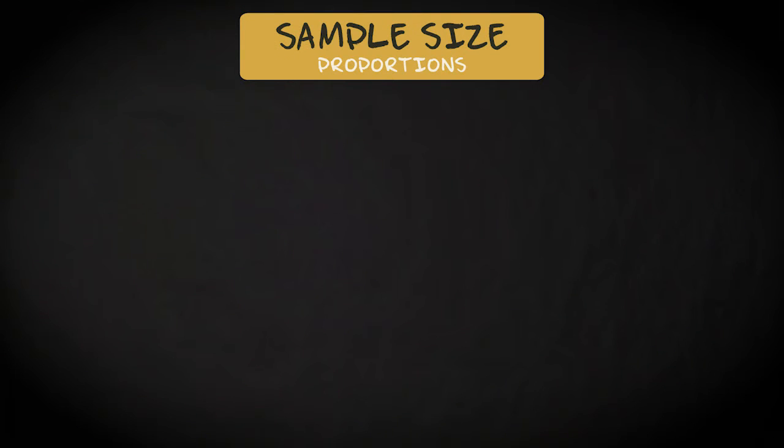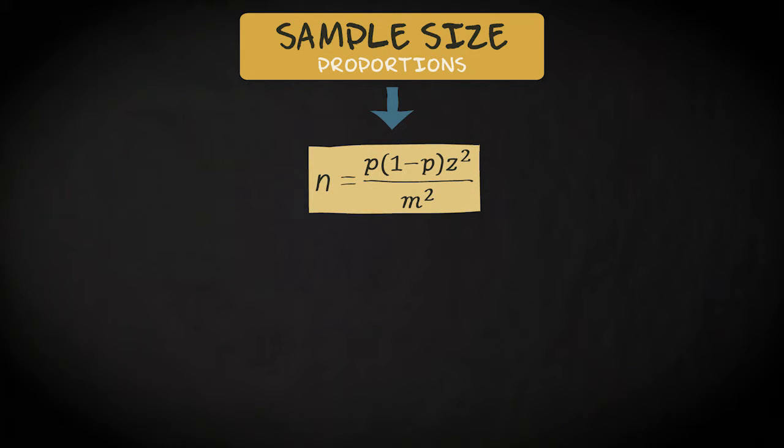Well, the formula looks very much like the previous formula. Here it is. The sample size for which a confidence interval for a population proportion pi has a margin of error m equals p times 1 minus p times the z-score corresponding to your chosen significance level squared, divided by the margin of error you allow, squared as well.